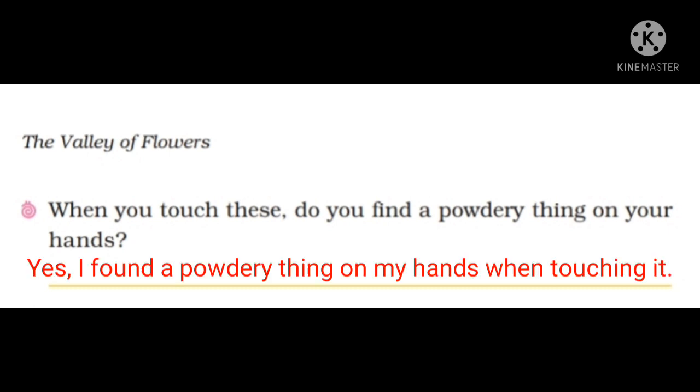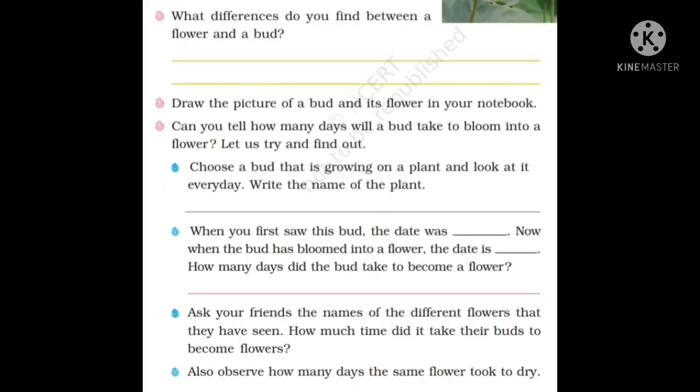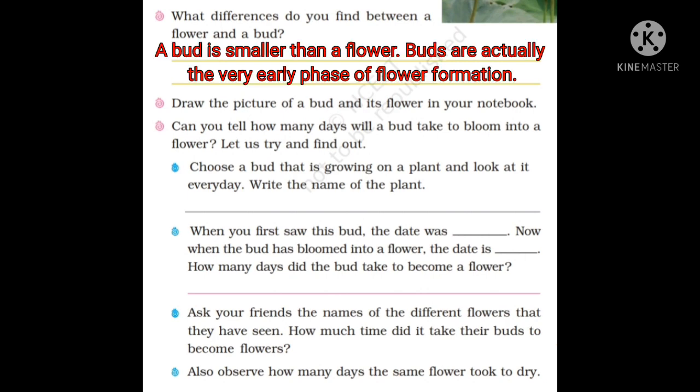What is the meaning of scent? Whenever you go to any party, marriage function, or any occasion, you put a deo, scent, or perfume on you. That scent gives you a good, lovely smell. Those scents are also made from flowers only — from Rose, Lavender, and Lilies.